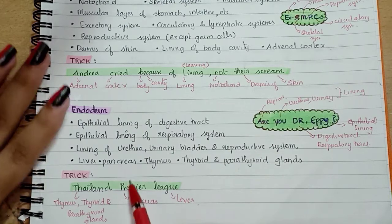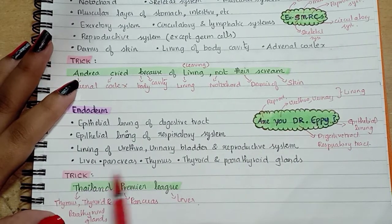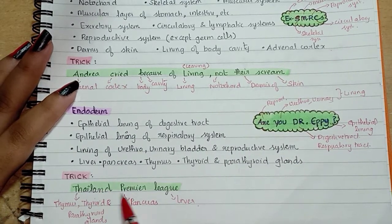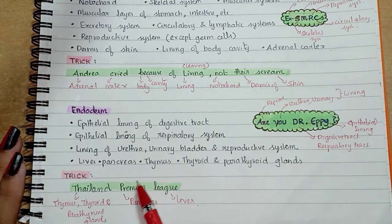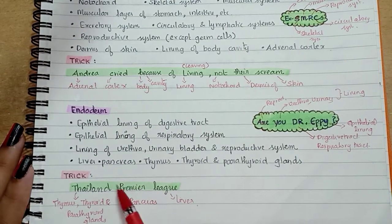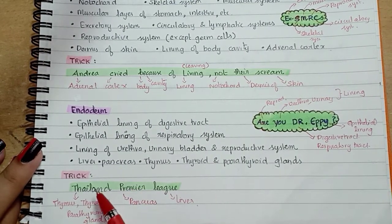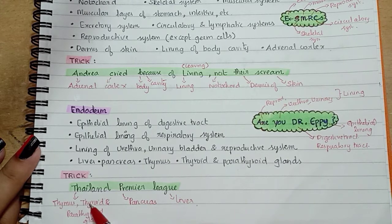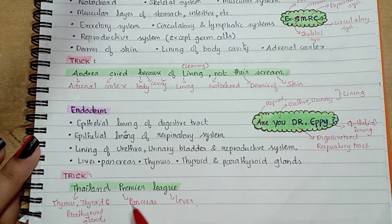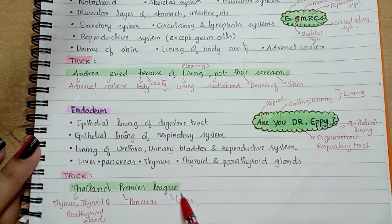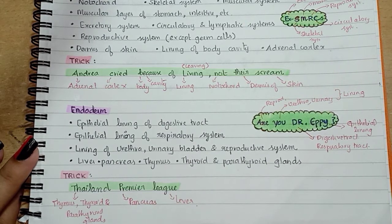The trick for the endoderm glands is 'Thailand Premier League' — just like IPL (Indian Premier League), we have Thailand Premier League. 'Thailand' stands for thymus, thyroid, and parathyroid — we can remember these three with the name Thailand. 'Premier League' stands for pancreas and liver.